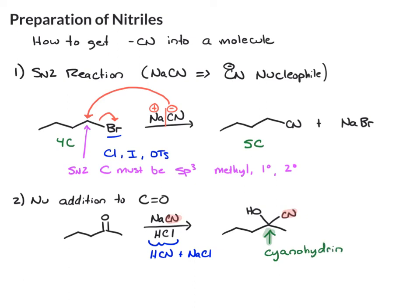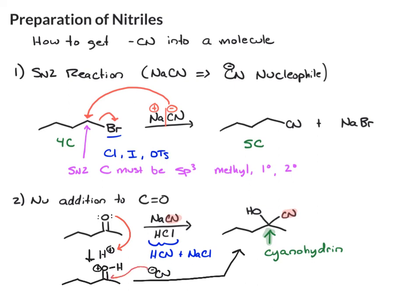In terms of how this works mechanistically, you should already know the first step, because what do we have? We have a carbonyl and we have acid. So the first step when you have an acid and a carbonyl is to protonate the carbonyl to make an activated carbonyl. Now that you have that activated carbonyl, we add our nucleophile, CN minus, which leads you to the product.